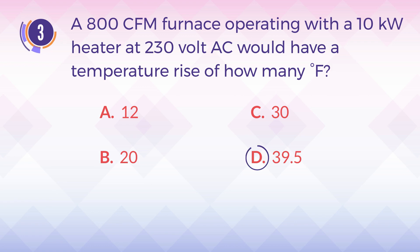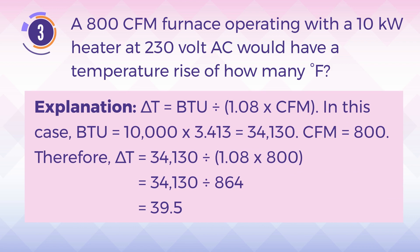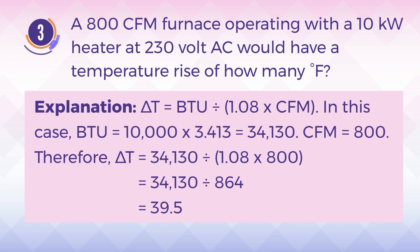The answer is D, 39.5. Explanation: Delta T equals BTUs divided by the product of 1.08 and CFM. In this case, BTU equals 10,000 multiplied by 3.413, so BTU equals 34,130. CFM is 800. Therefore, Delta T equals 34,130 divided by (1.08 × 800), which equals 34,130 divided by 864, so the final result is 39.5.